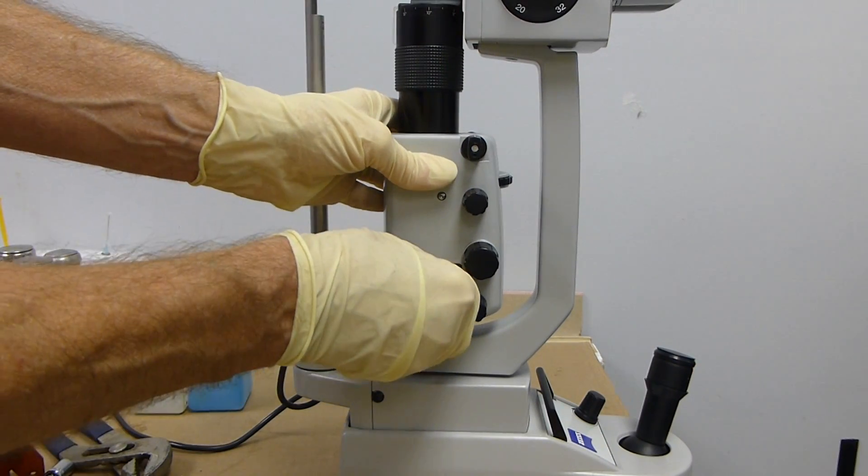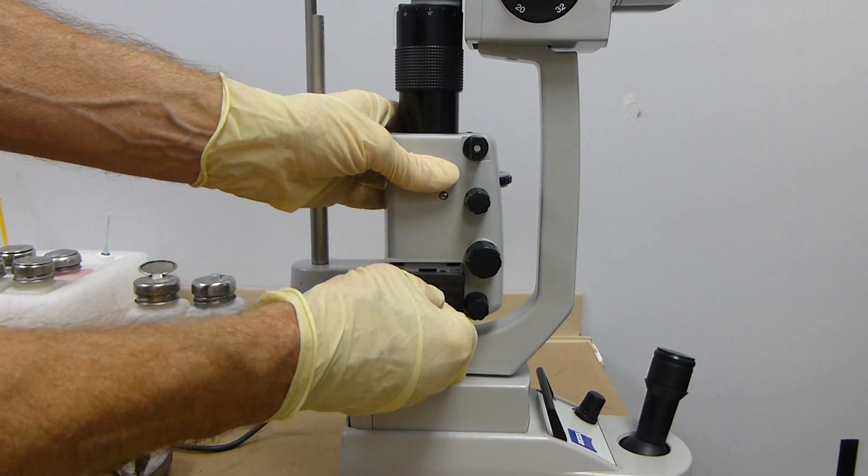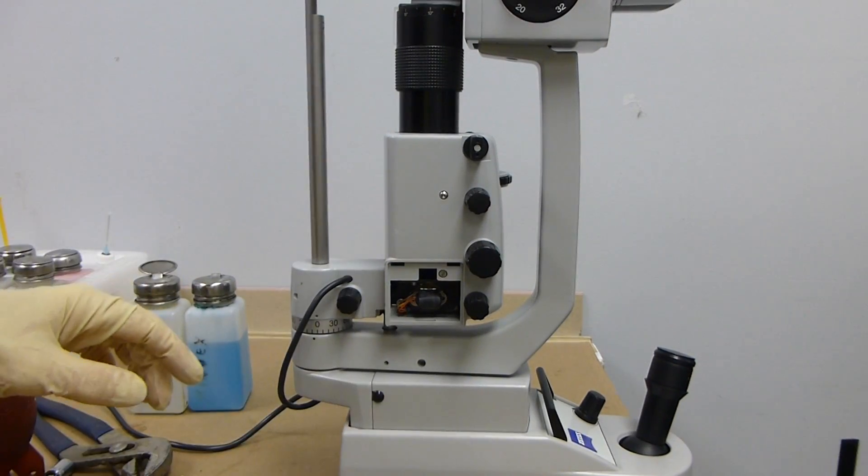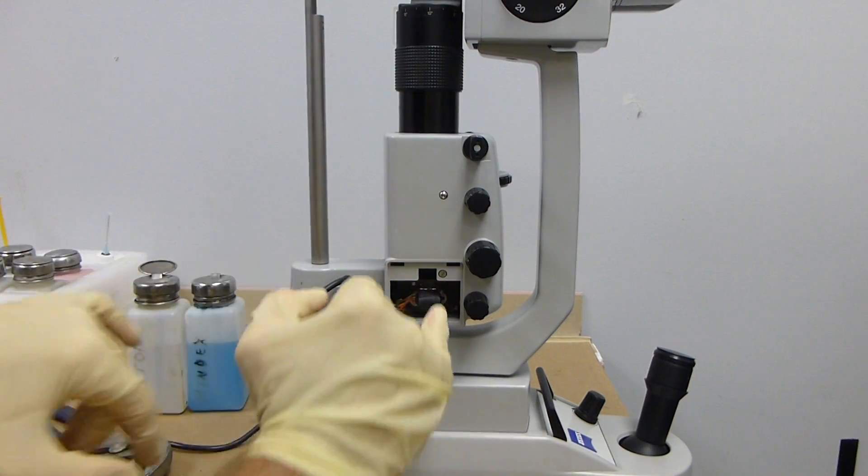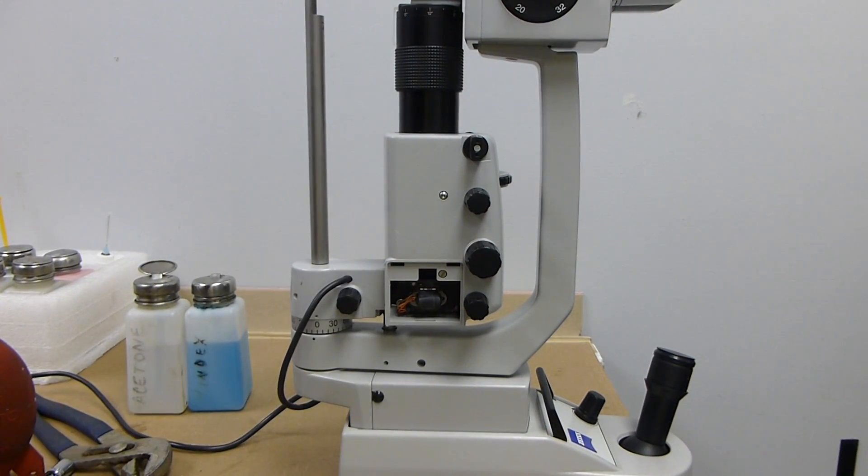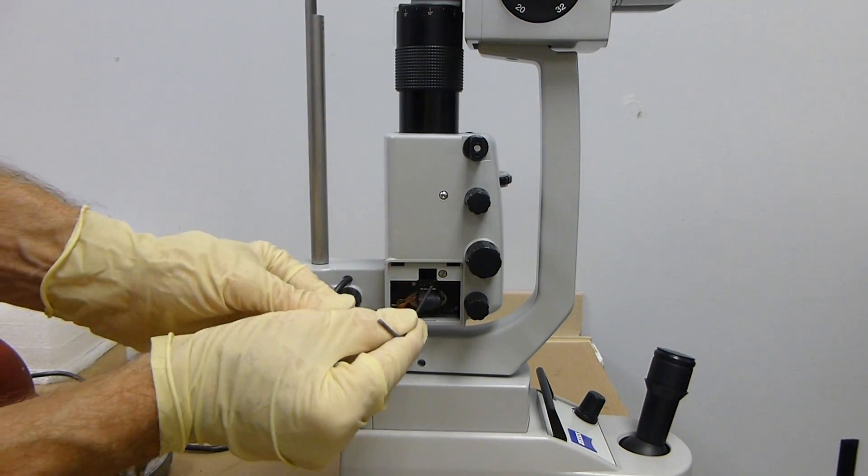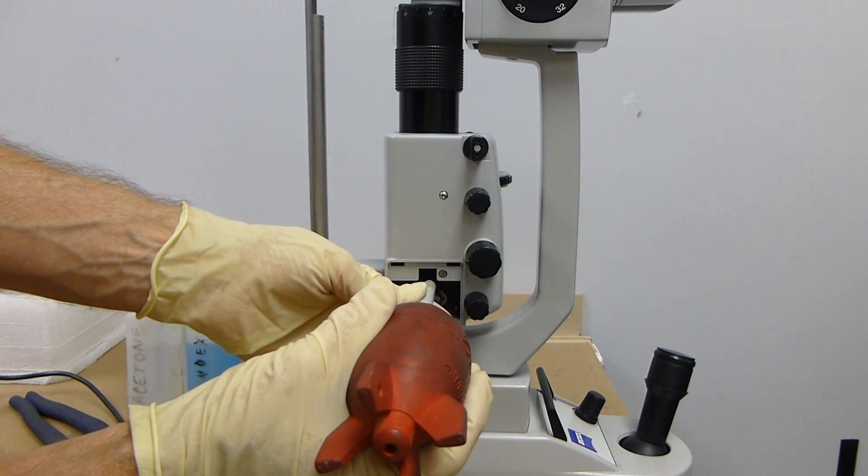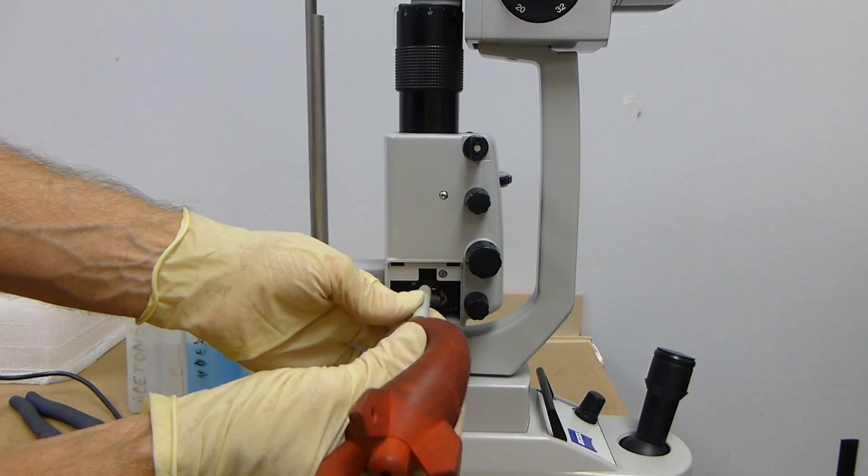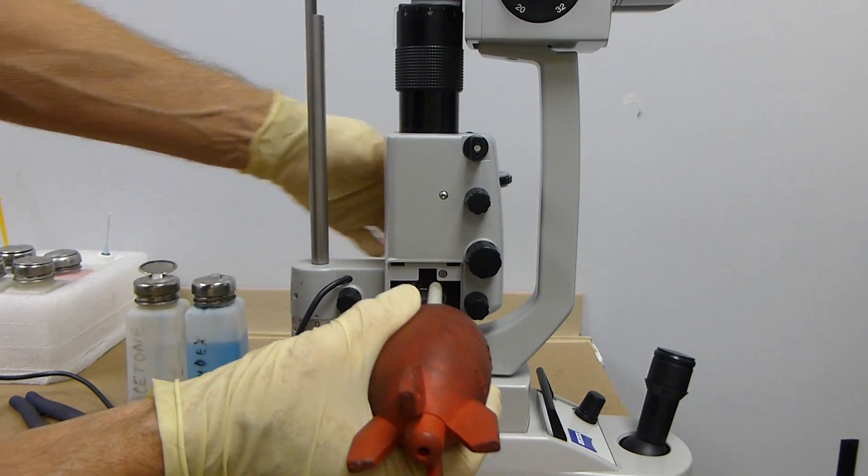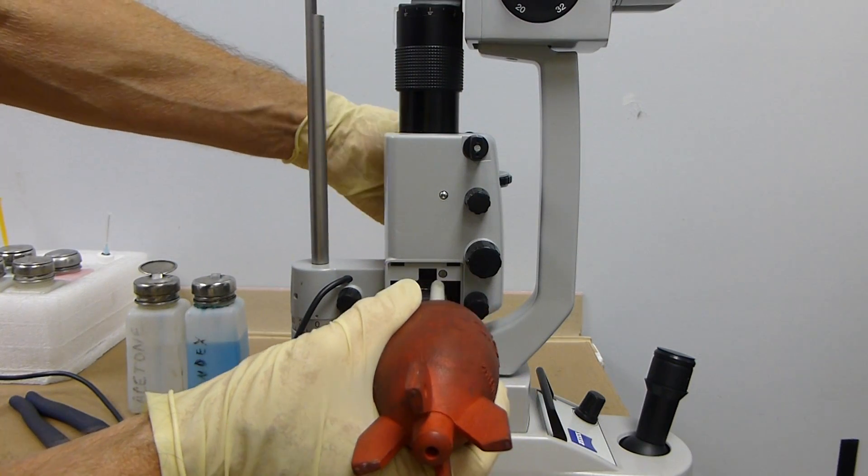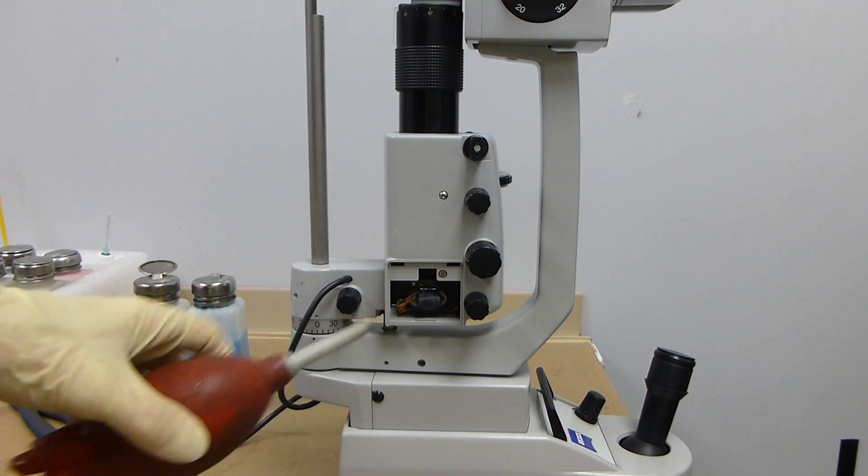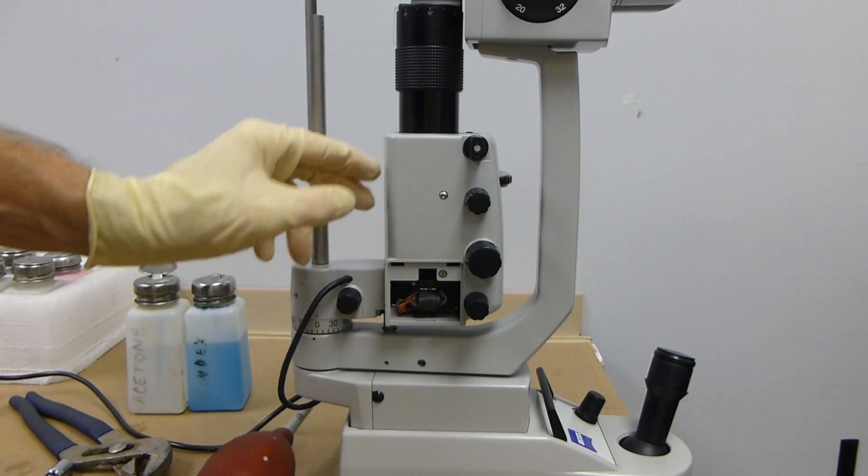You might be able to do it by taking off the bulb cover, pulling it down. There's a little bit of access through here where you can use your hurricane blower to blow inside where the slits are opening and closing, and you might be able to get dust off the slits.